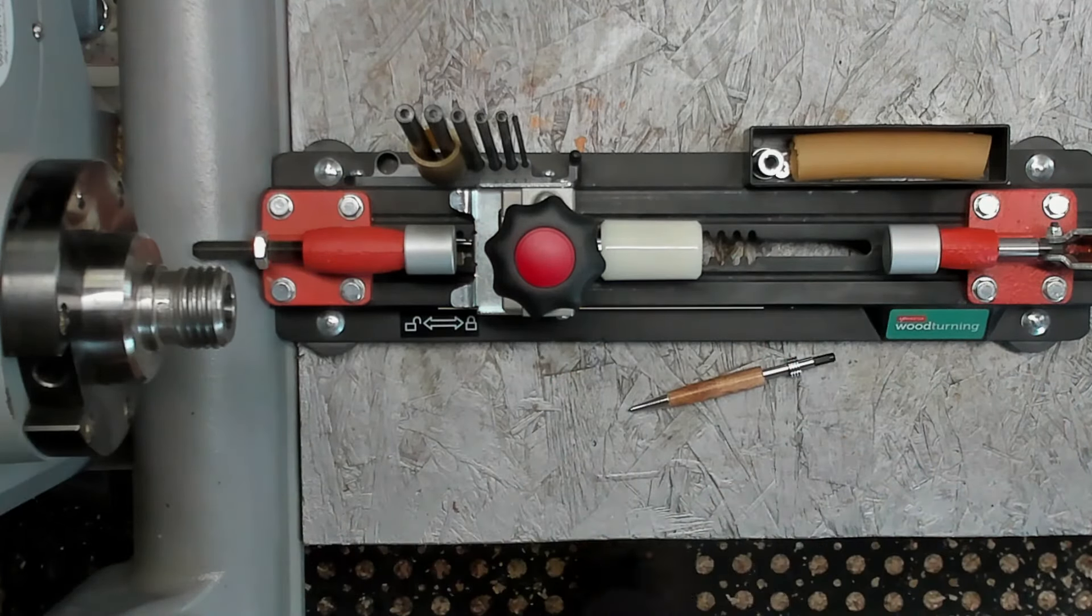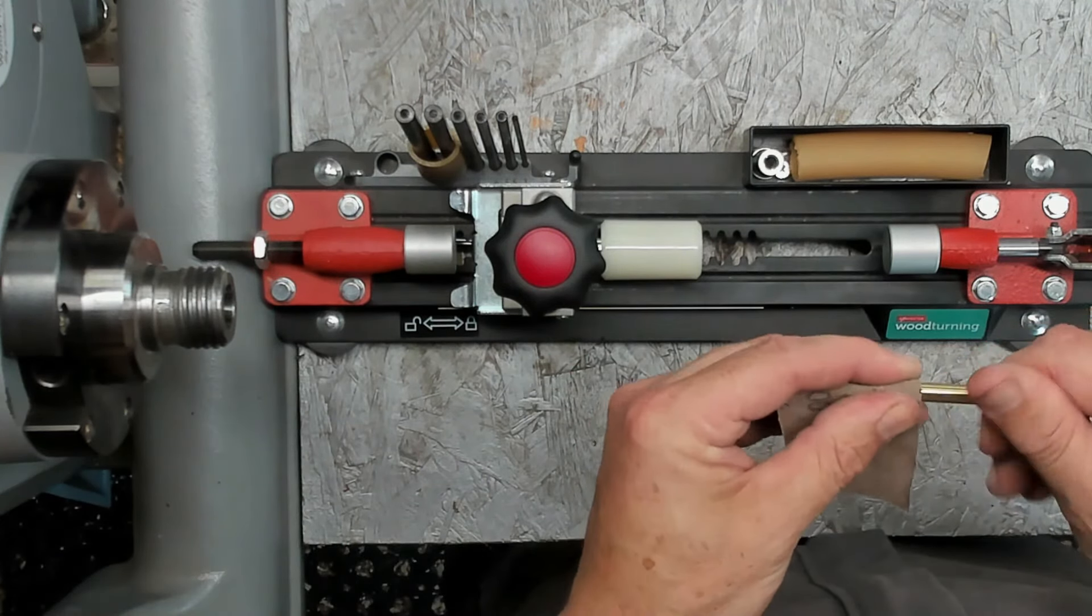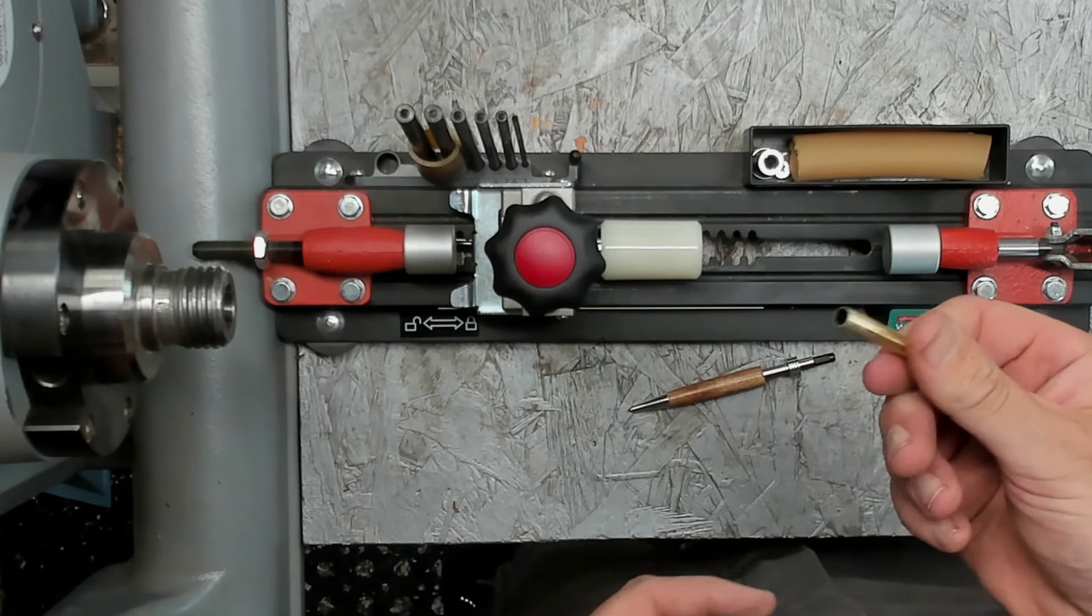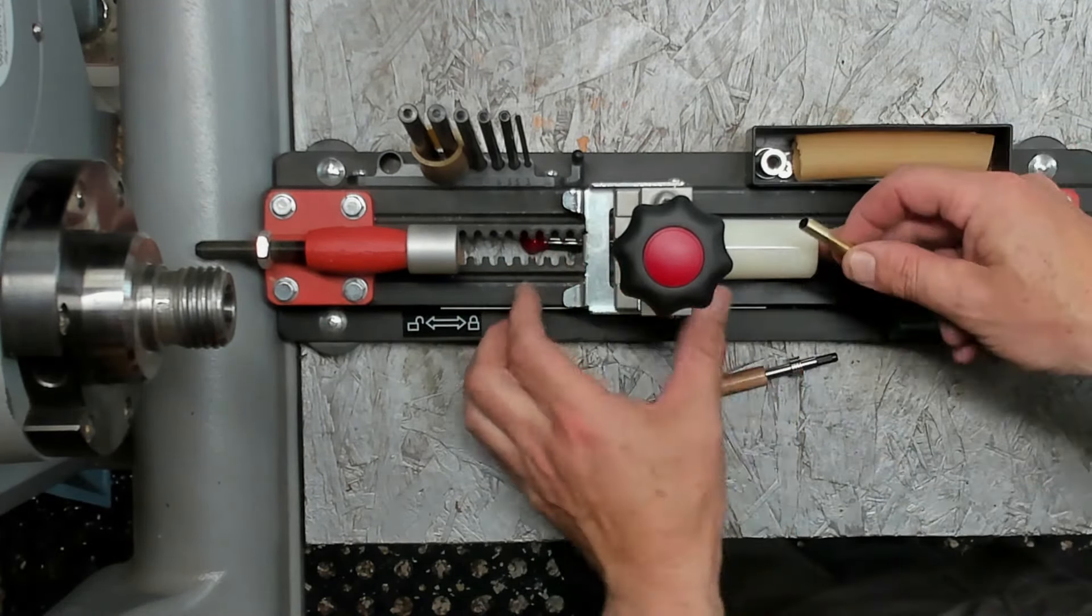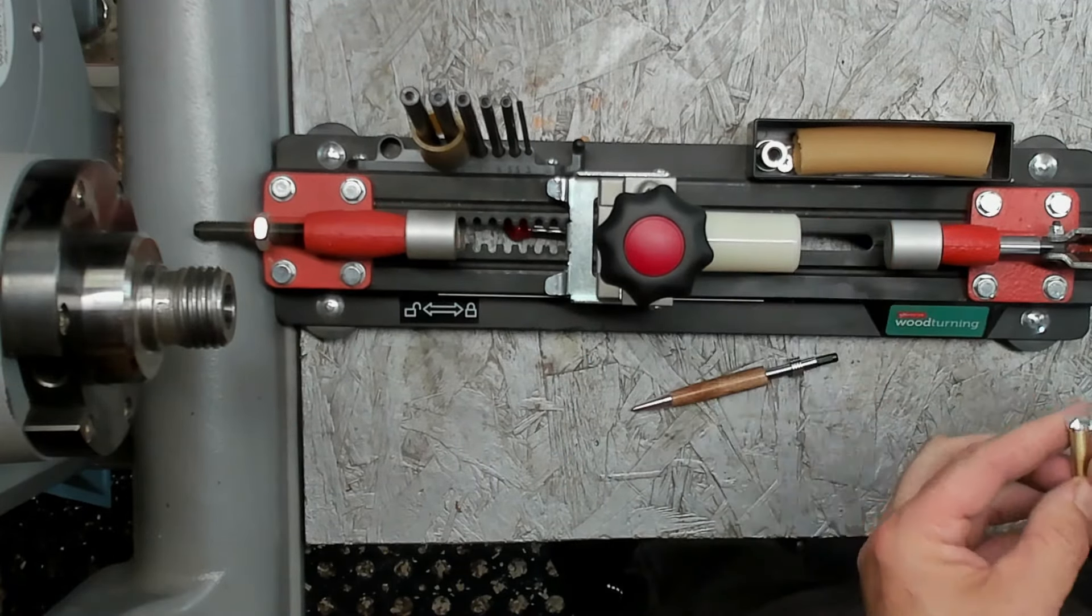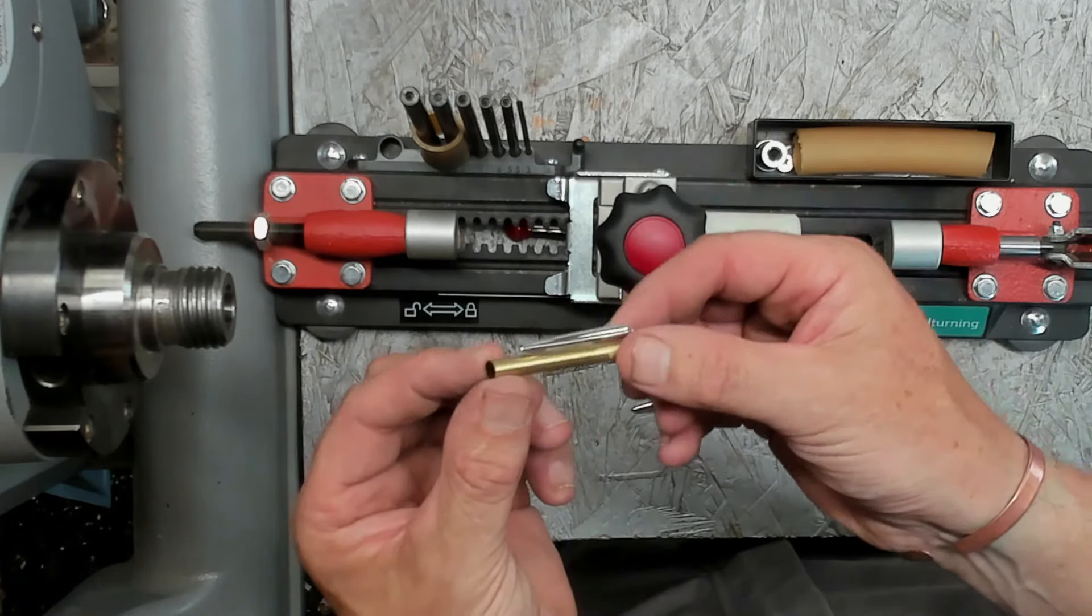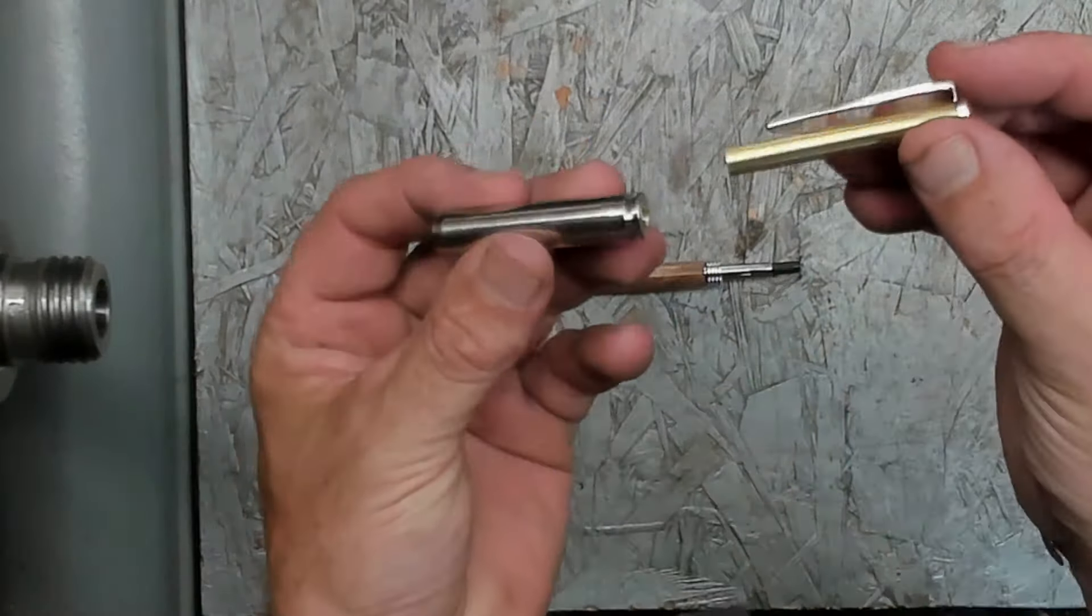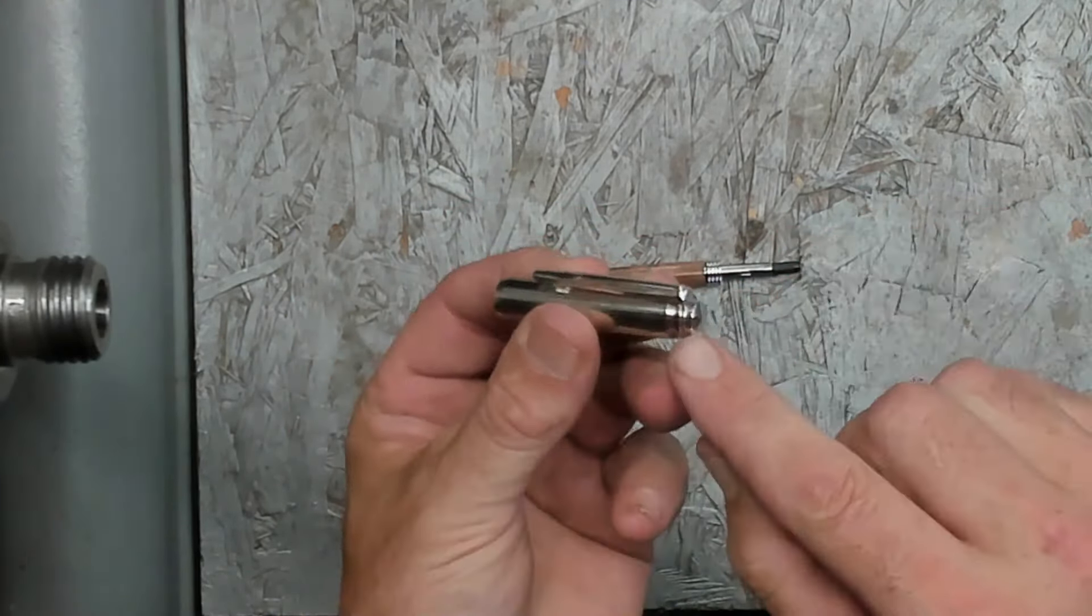We start off by putting the nib in the smaller end. Now this is the little transmission, so he goes in next. Let's just try the nib before I go any further. Don't want to push it too far in. As you can see, the nib needs to come out another tiny little bit. We'll give another half a tap. There we go, just right. Next thing is the center band. That's that piece done.